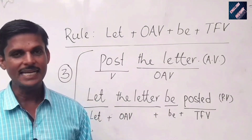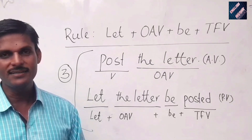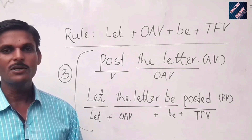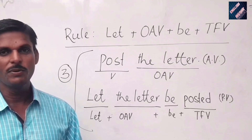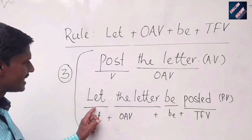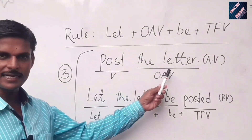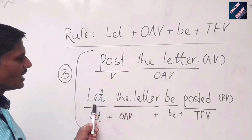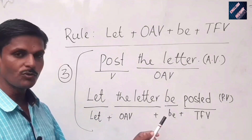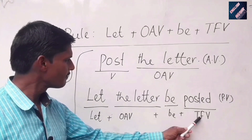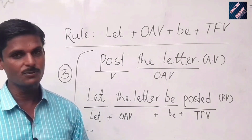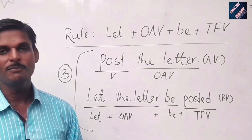Sentence number three: 'Post the letter' — active voice. Applying the rule: first 'let,' then 'the letter' as the OAV, then 'be,' and the third form of 'post' is 'posted.' So the active voice is 'Post the letter' and the passive voice is 'Let the letter be posted.'